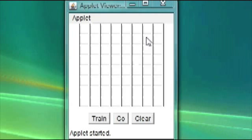You can draw patterns onto this grid and click train. The neural network will be trained for the pattern that you drew. You can also click go and the neural network will attempt to recognize the pattern that you just draw. Clear will clear the entire grid of any drawings that you had made before.